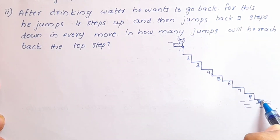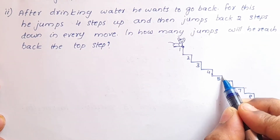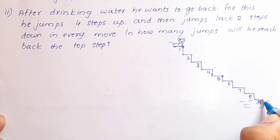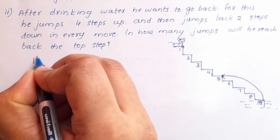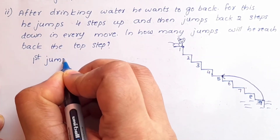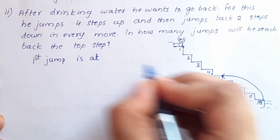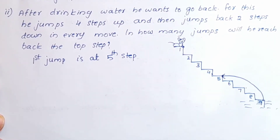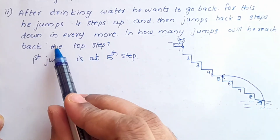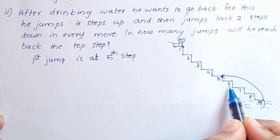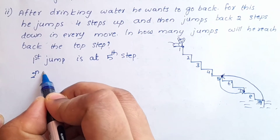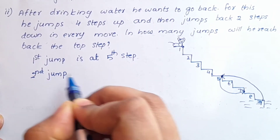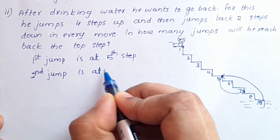In the first jump, from the 9th step, 4 steps up reaches the 5th step. Then 2 steps down to the 7th step. The second jump: 4 steps up from the 7th step reaches the 3rd step, then 2 steps down to the 5th step.